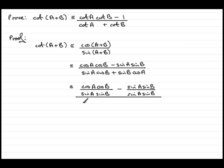Do the same for the two terms on the bottom of the fraction. So this term, sine A, cos B. Sine A, cos B. Divide that by sine A, sine B.